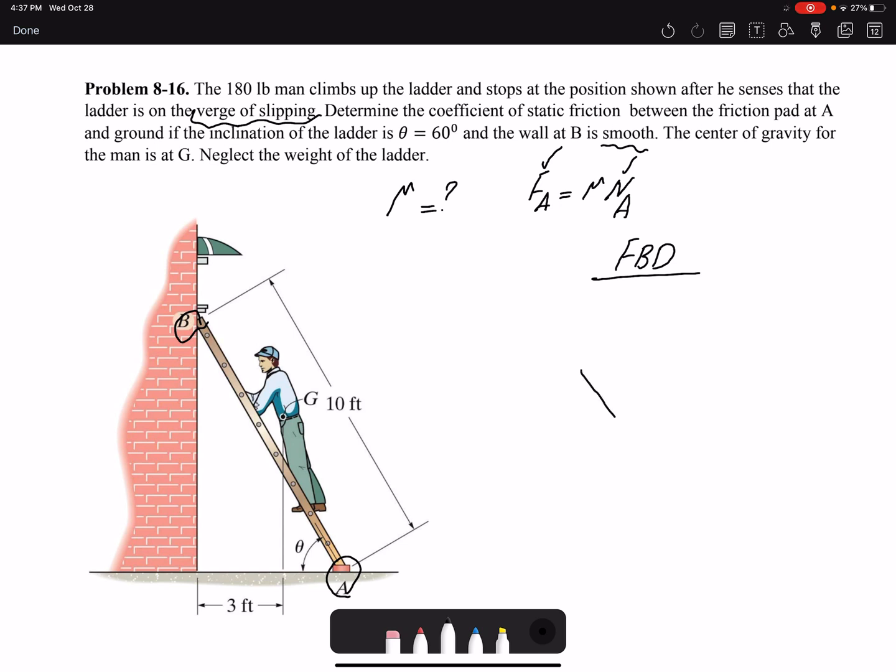If I draw the free body diagram here, I have a normal force at A. The ladder tends to move to the right, so the friction force would be in the opposite direction. Then I have NB. If you do not identify the correct direction of the friction, you would get a negative value at the end and you know the direction you assumed is incorrect. This is the weight, which is 180 pounds.